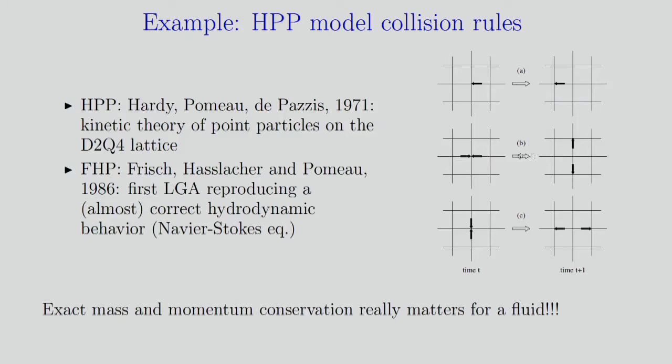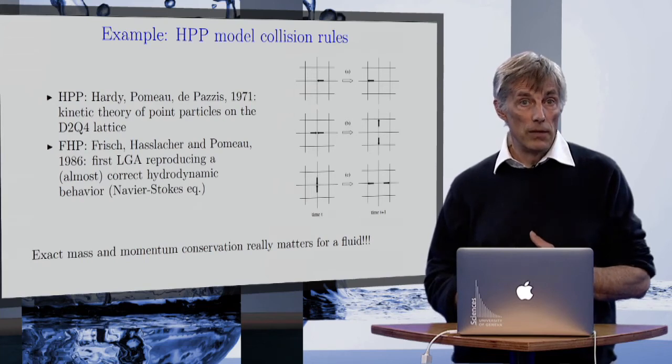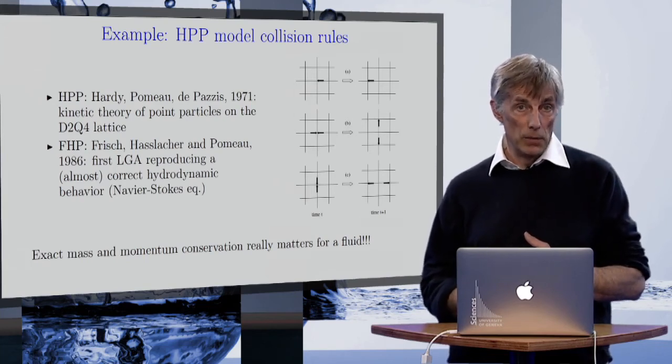You can see that here you conserve mass and momentum because you have two particles before collision, you have two particles after collision. You have zero momentum because they are opposite velocity before collision, you have zero momentum after collision because particles still have opposite velocity. And so you implement in this interaction two fundamental rules of hydrodynamics which is mass and momentum conservation.